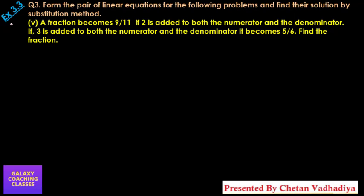Hello friends, my name is Chetan Vadadya and today we are going to solve CBSE class 10th maths exercise 3.3, question number 3, subpart 5. A fraction becomes 9 by 11 if 2 is added to both the numerator and the denominator. If 3 is added to both the numerator and the denominator, it becomes 5 by 6. Find the fraction.